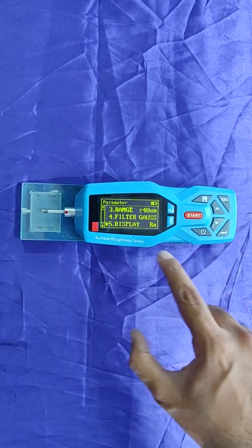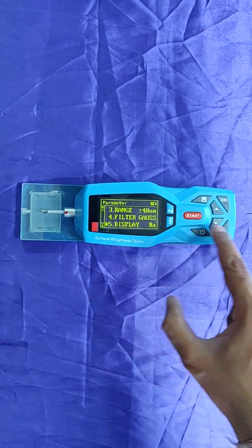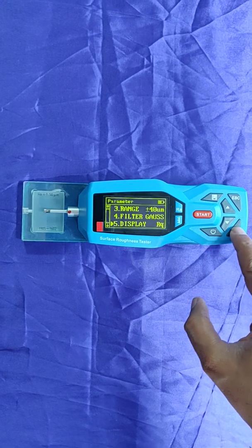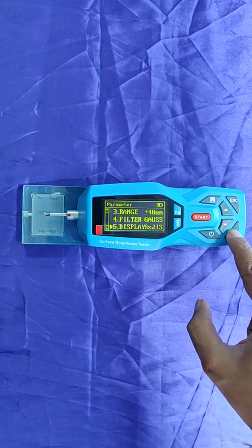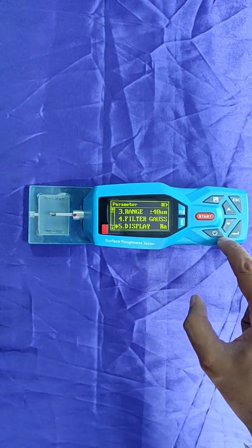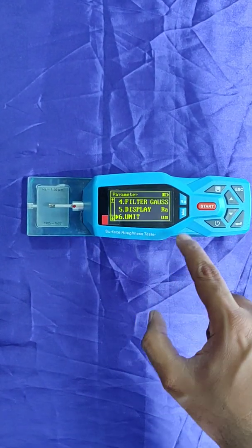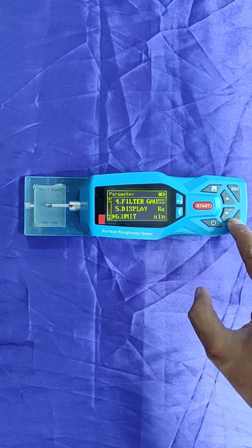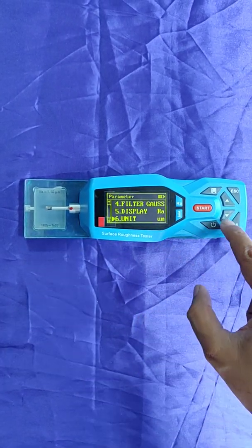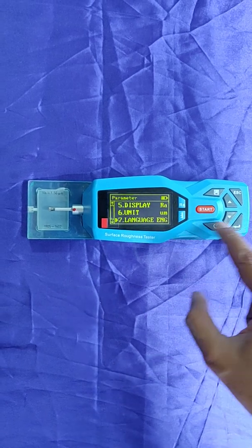Display right now is Ra, but we can have Rz, Rt, Rq, Rz JIS, but we come back to Ra. Units is in microns. If you want to change in micron inches. Language is English.